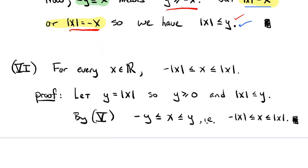Property six: for any number x, it's always between the opposite of its absolute value and its absolute value. This is really just applying property five to the special case where y is the absolute value of x. Since |x| ≥ 0 by definition and |x| ≤ |x| is an equality, applying what we just proved gives -|x| ≤ x ≤ |x|. So property six is just a special case of five.